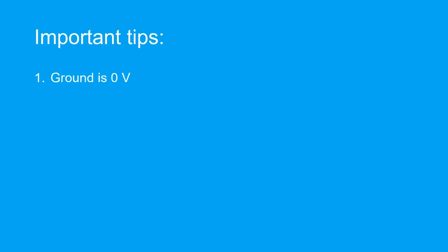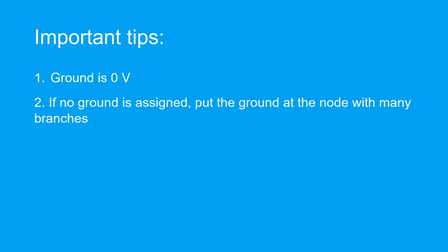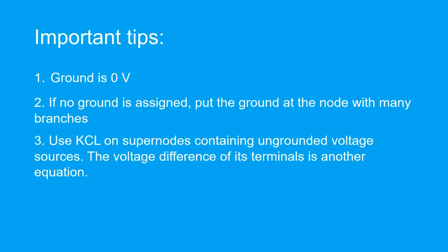Here are some important tips regarding the node voltage method. Grounds have a voltage of 0 volts. If the problem does not give the ground, you should place the ground at the node with the most branch connections. When you encounter voltage sources not connected to the ground, write the KCL equation for the supernode containing the voltage source. Another equation can be obtained by taking the difference of its two terminals — sounds crazy, but this will make sense later.